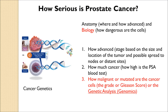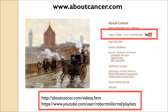So how serious is prostate cancer? All of these things are important: the anatomy, the staging, the PSA level, and definitely the Gleason score — the grade or how mutated the cells are. And depending on when you watch this video, genomics or genetic testing may trump everything. All of the information shown here, including the calculators and other prostate cancer videos, can be found on the website. Thank you.